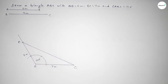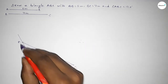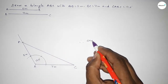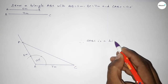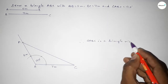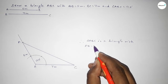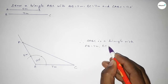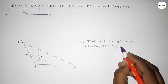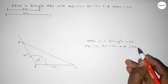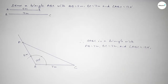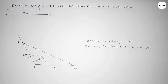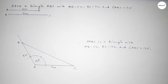This side is 7 centimeters and this side is 5 centimeters. Therefore triangle ABC is a triangle with AB equal to 5 centimeters, BC equal to 7 centimeters, and angle ABC equal to 120 degrees. That's all. Thanks for watching — if this video is helpful to you, please share it with your friends.